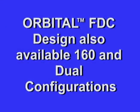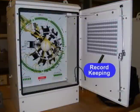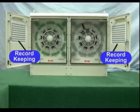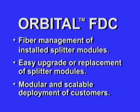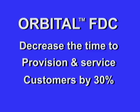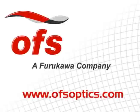The orbital cabinet comes in two other size configurations: one that serves 160 homes and one that serves 576 homes. The orbital 160 cabinet leverages the size and functionality of the orbital 288 cabinet with an optimized face plate. The orbital 576 combines two 288 cabinets offering a dual radius configuration. In summary, the orbital cabinet provides several substantial improvements to standard splitter cabinet technology, including improved fiber management, easy upgrade or replacement of splitter modules, and modular and scalable deployment of customers. These improvements can decrease time to provision and service customers by 30%.